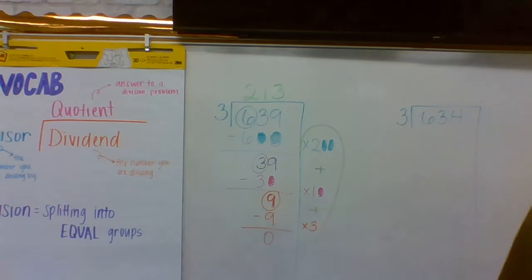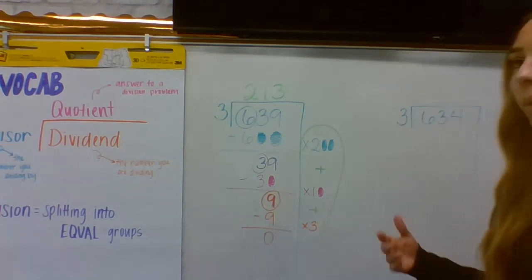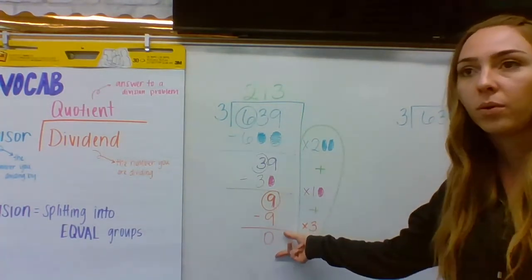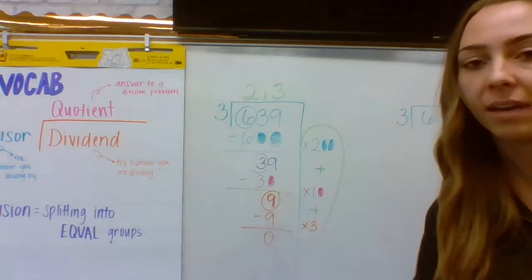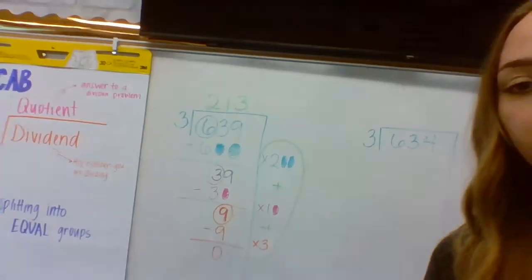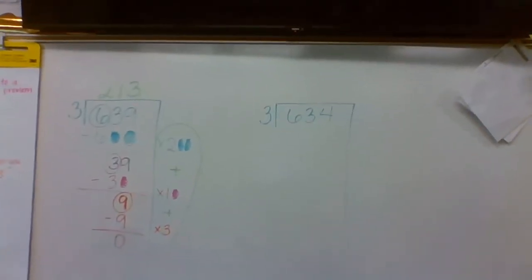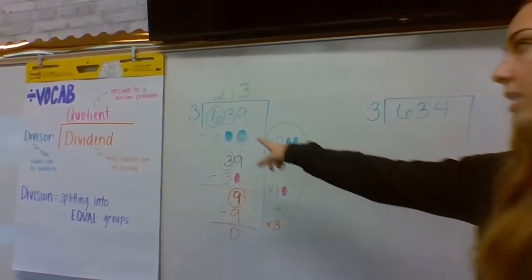You probably noticed by now that it always seems to work out really well that we get rid of the whole number. You can see at the end we're left with zero. However, that won't always happen. It won't always be so pretty. So you can see that I changed this number just by one digit.